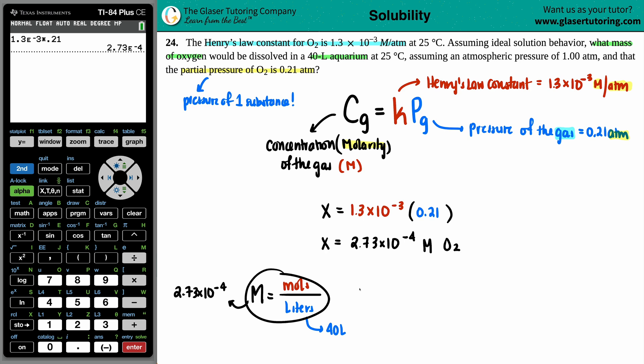If we just cross-multiply here, moles would equal molarity times liter. So maybe I'll just set that up right now. Moles will equal molarity times liter. So moles equal molarity, which is the 2.73 times 10 to the negative fourth, times, we're already in liters, it's a 40-liter, so 40. Take that answer, times it by 40, and you get a mole value of 0.01092, and that's moles of O2.